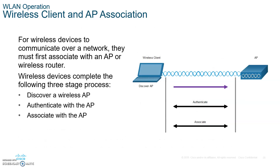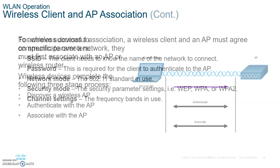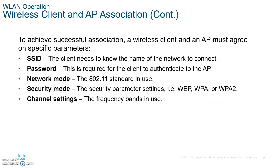Let's talk about client and AP association. The client must discover the AP, then authenticate, and then associate — those are the three steps. Associating with the AP means the client and the AP must agree. Please write these five things down: they must agree on the SSID (the name of the network), the password to authenticate, the network mode (802.11 A, B, G, N, etc.), and the security mode (WEP, WPA, WPA2).